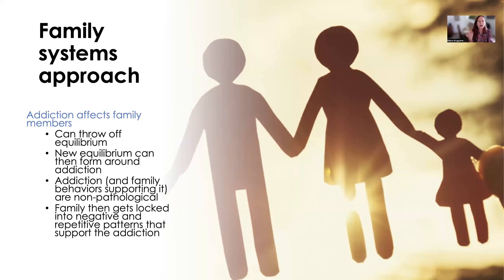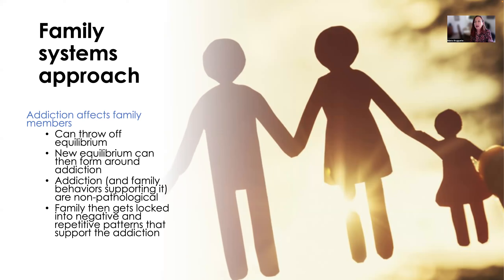Addiction affects family members and can throw off that equilibrium. Someone starts using drugs, for example, and that's going to affect the family and throw off that equilibrium — all of a sudden there's an imbalance. But a lot of times, the family is not disrupted forever. What will happen is a new equilibrium will form around the drug addiction, and family members start behaving in ways that create a new stability around that problem behavior. And sometimes that can serve to maintain the addiction.